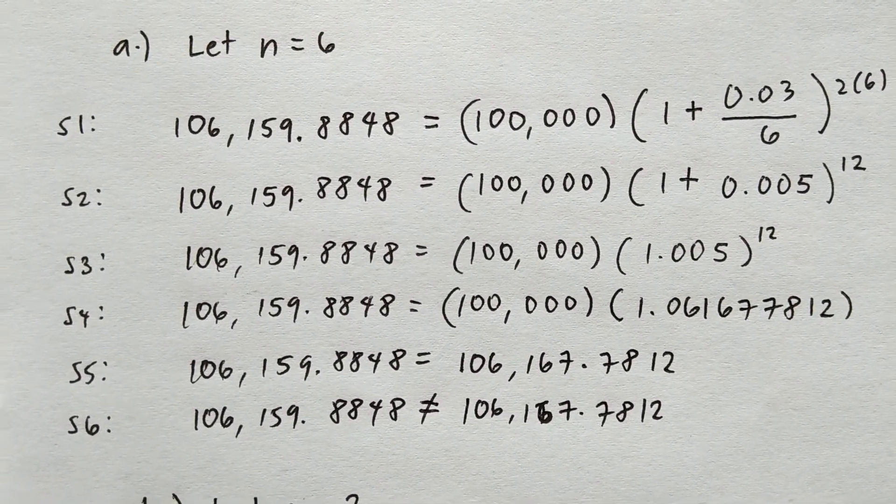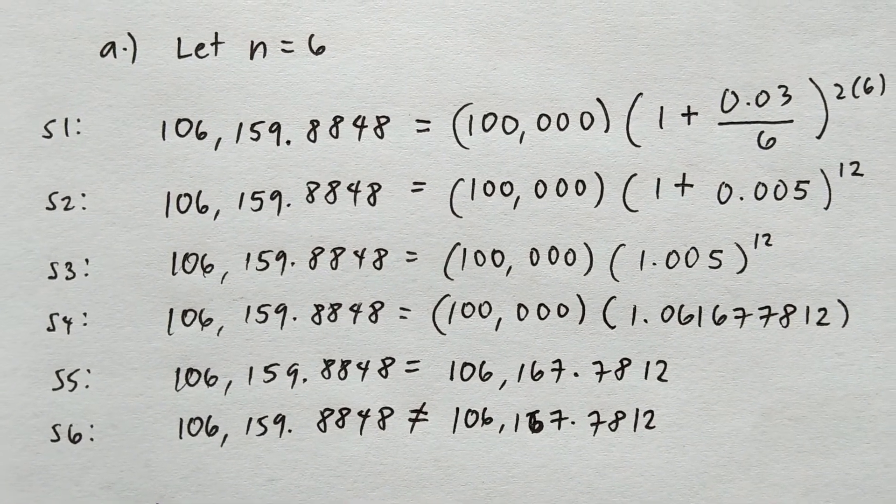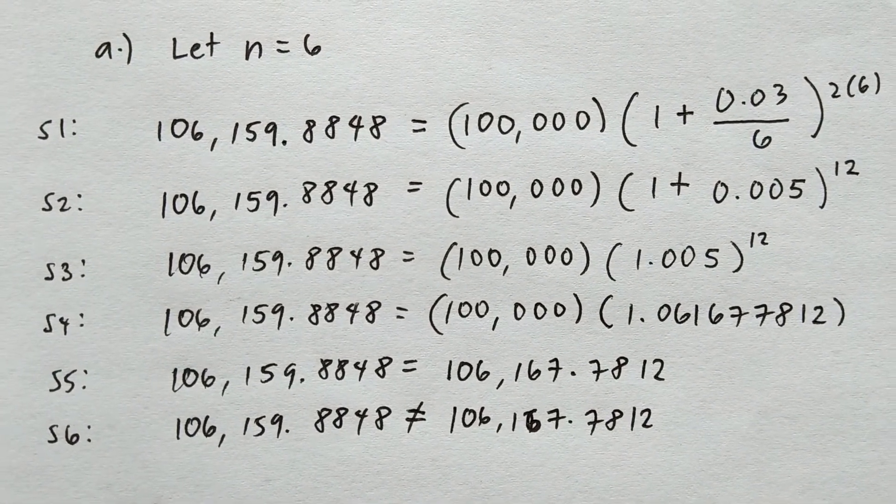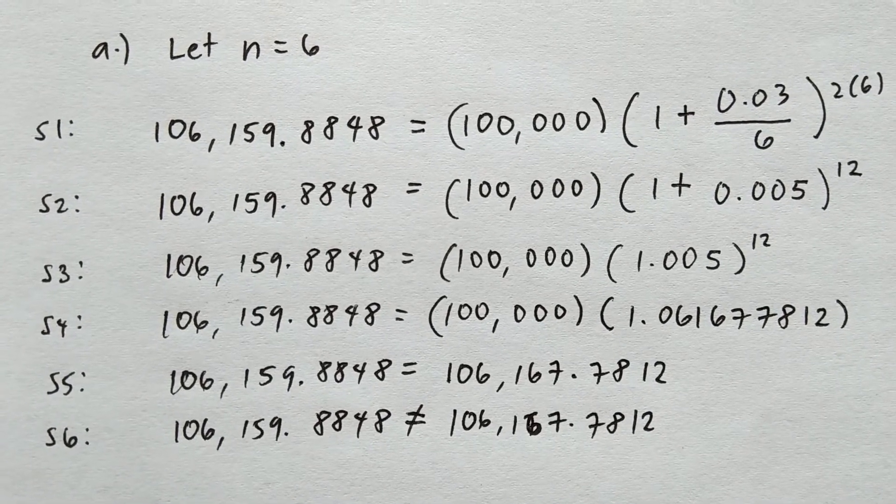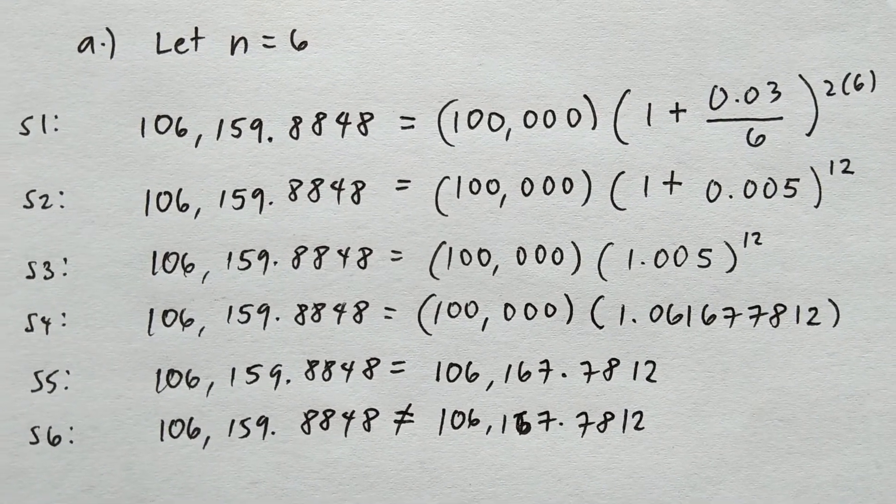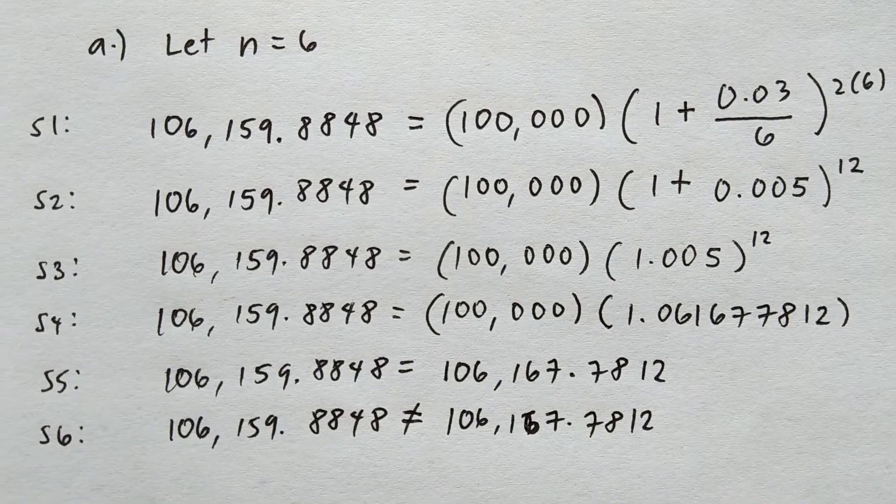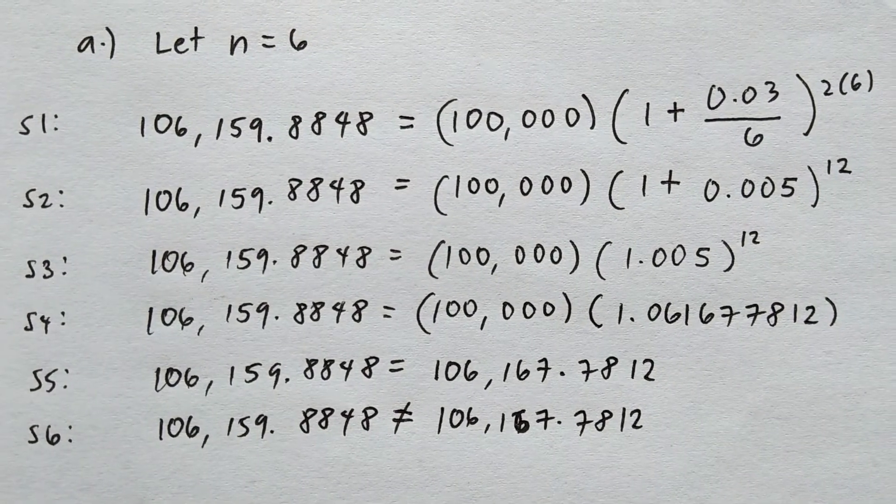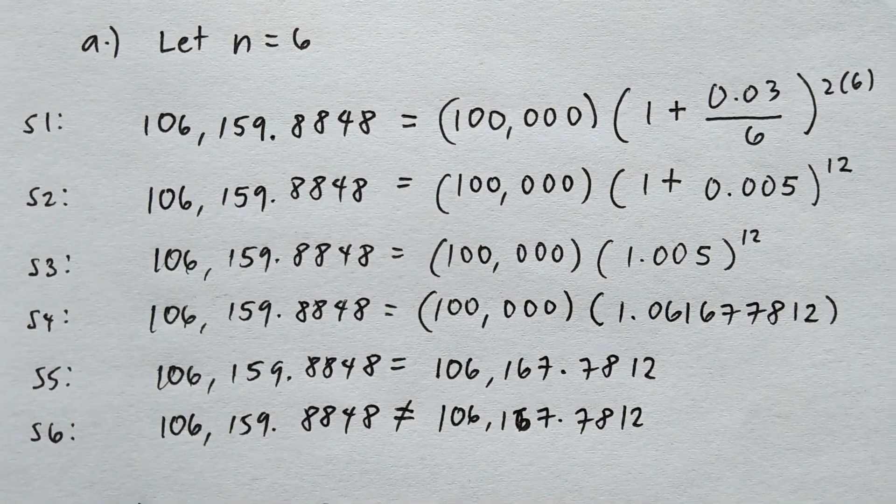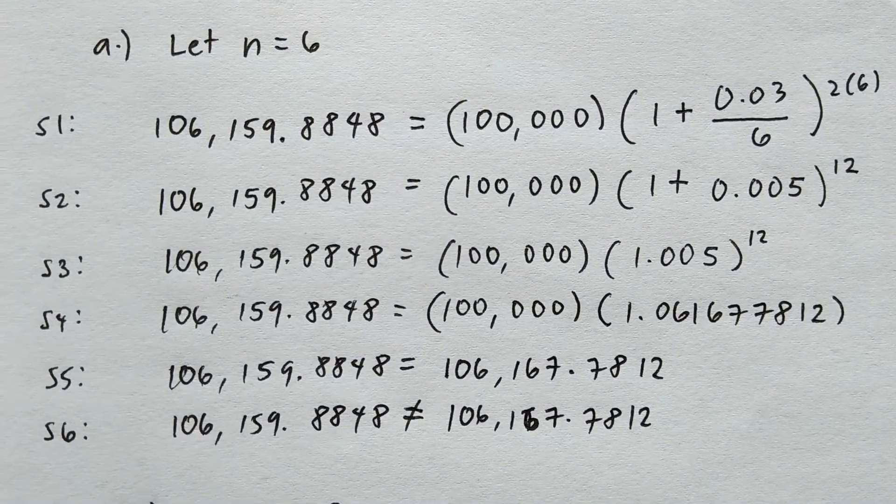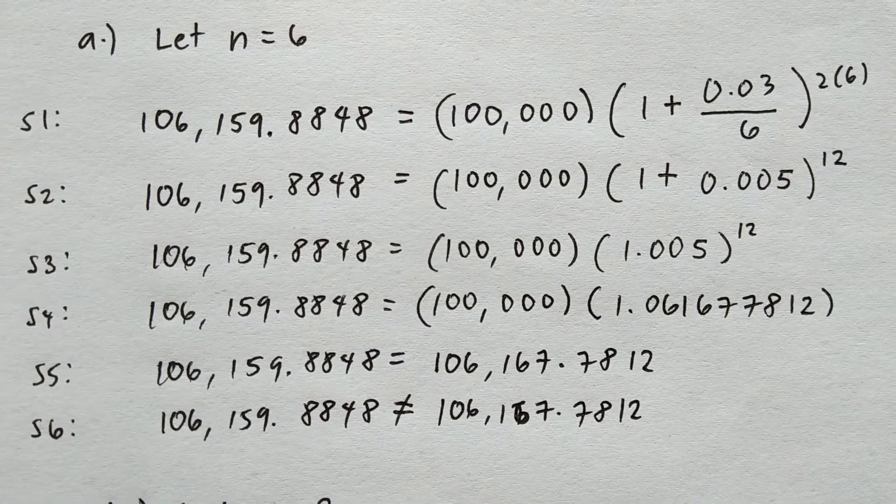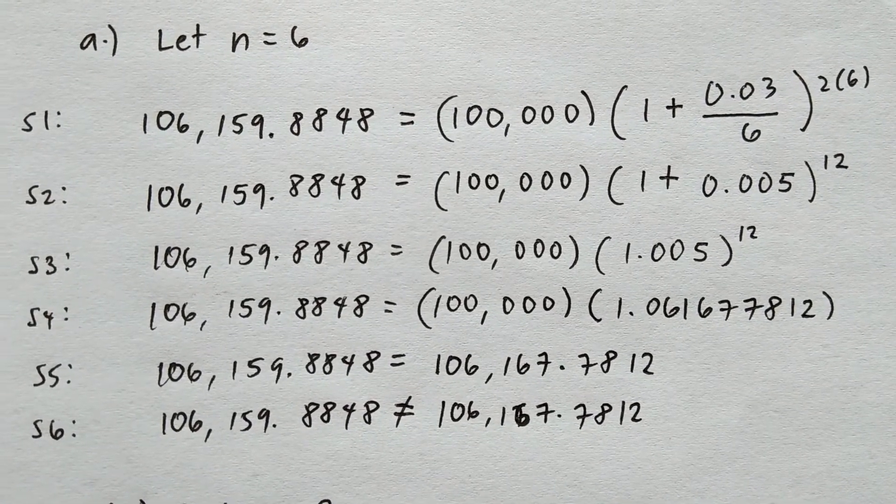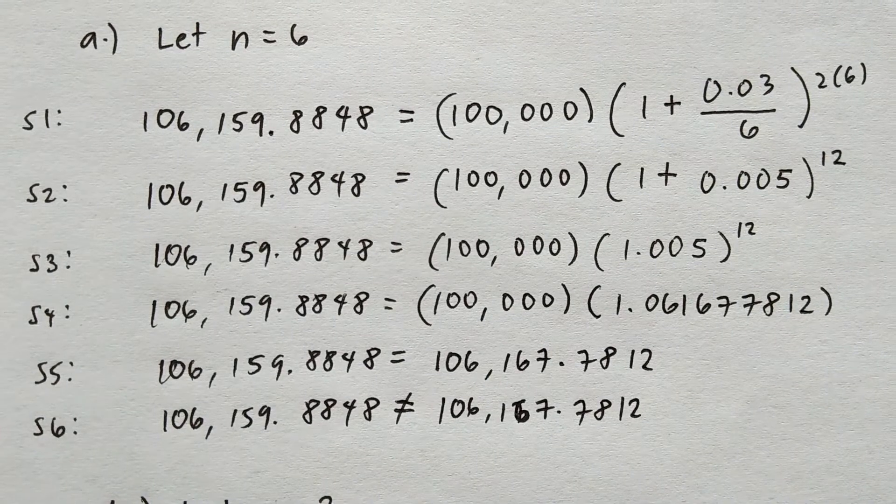This power is then multiplied to 100,000. In step 5, we get 106,167.7812. Because both sides of the equation are not equal to each other, in step 6 we have the inequality sign to show that both quantities are not equal. Take note that the steps in solution a are the same with solutions b, c, and d.